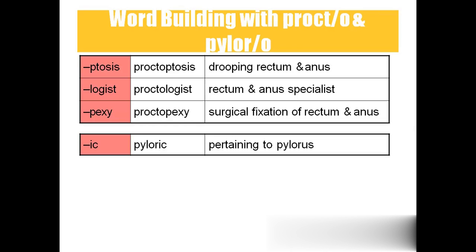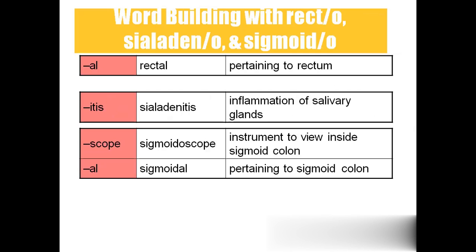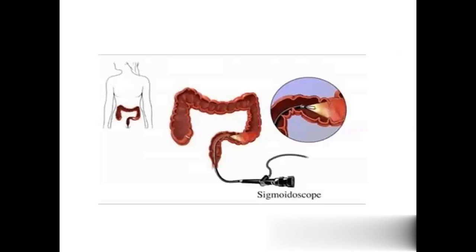Pyloric means pertaining to the pylorus; rectal means pertaining to the rectum; sialadenitis is inflammation of the salivary glands. Sigmoidoscope is the instrument to view inside the sigmoid colon; sigmoidal means pertaining to the sigmoid colon. The sigmoidoscope is inserted to view inside the sigmoid colon.